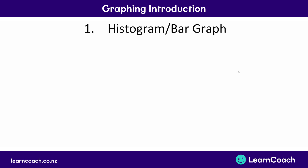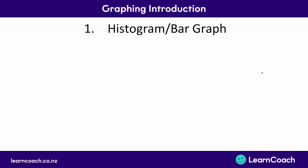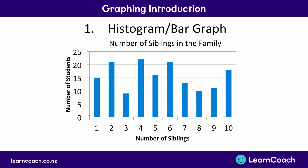The first graph we're going to look at is a histogram — the good old bar graph. On a bar graph, all you need to do is understand what the data is telling you and just read the graph. This graph measures the number of siblings each student has, with the number of siblings on the x-axis and the number of students on the y-axis.